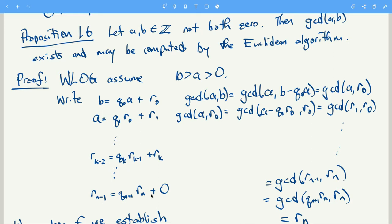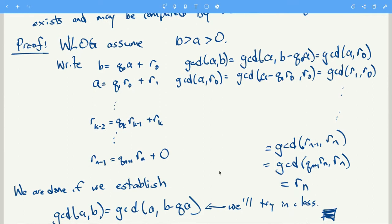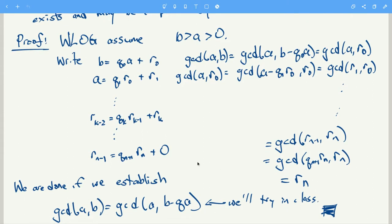The question is what does that tell us about the GCD? We claim that the last non-zero remainder rn is the GCD. If we assume that for any integers a and b, the GCD of a and b equals the GCD of a with b minus qa — which we'll establish in class — then we can show that rn is the GCD of a and b.